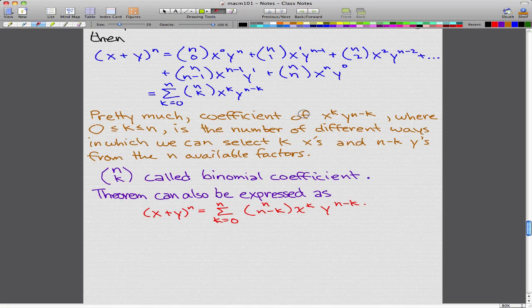So pretty much the coefficient of x to the power of k, y to the power of n minus k, where 0 is less than or equal to k, less than or equal to n, is the number of different ways in which we can select k x's and n minus k y's from the n available factors. And n choose k is called the binomial coefficient. This can also be expressed as this equation.